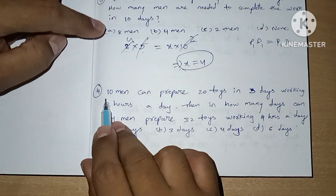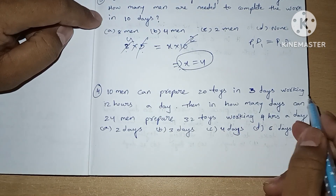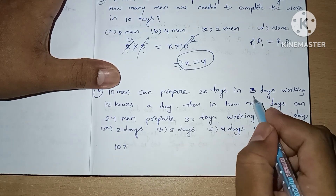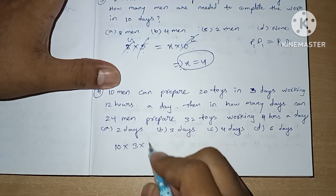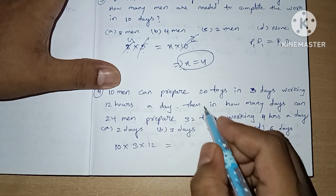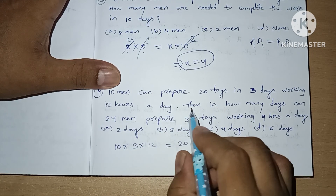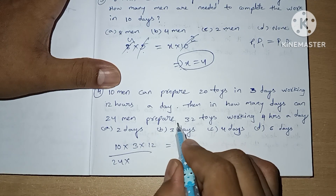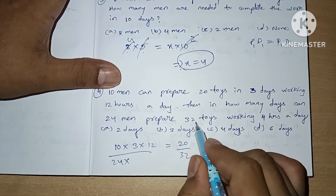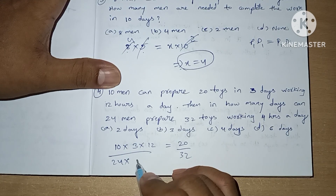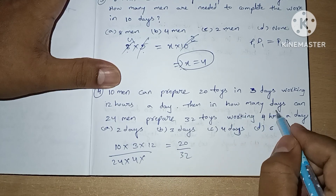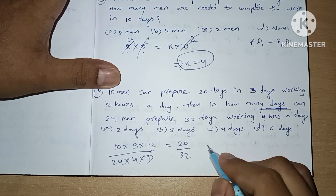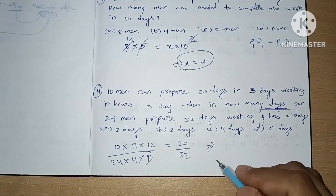Let's see the fourth question. 10 men can prepare 20 toys in 3 days working 12 hours. According to the PhD formula: 10 persons, 3 days, 12 hours can make 20 toys. Then in how many days can 24 men prepare 32 toys working 4 hours a day? The question asks how many days, so we need to find D.